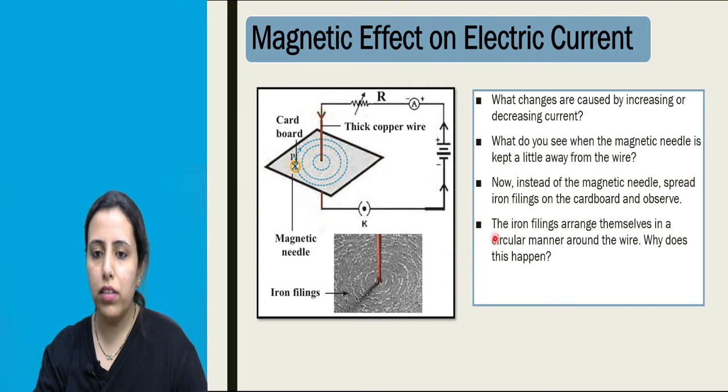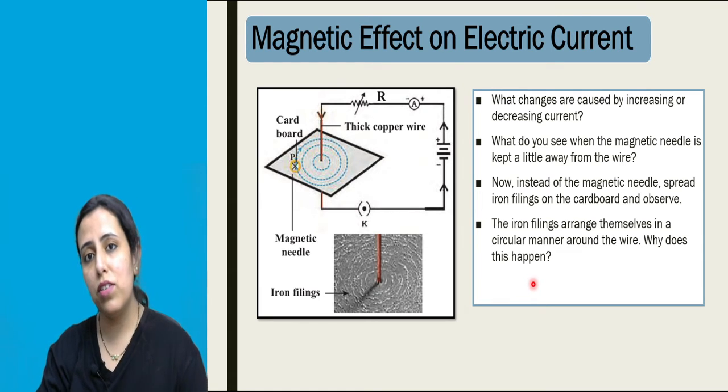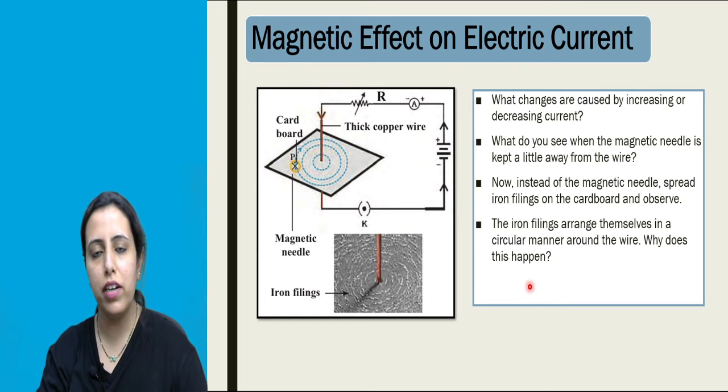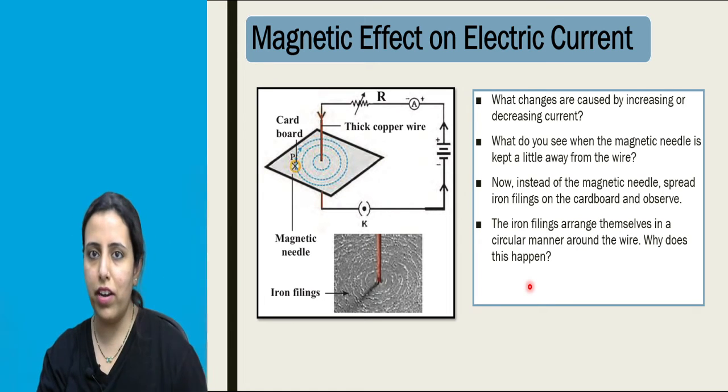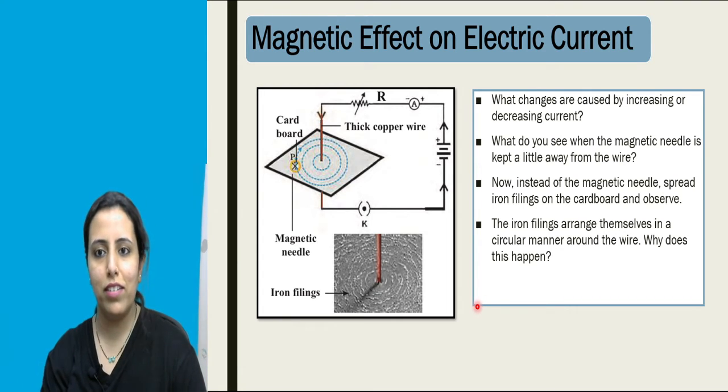Then next, the fourth question. The iron filings arrange themselves in a circular manner around the wire. Why does it happen? Very simple - because there is a presence of magnetic field. Why there is a presence of magnetic field? Because electric current is flowing through it, flowing through the conductor. And Oersted has stated that whenever there is a flow of electric current, it produces magnetic field around it.